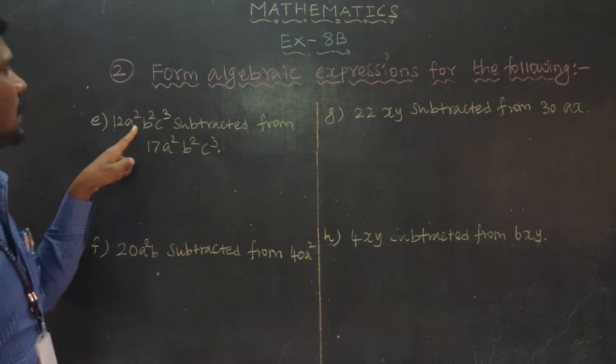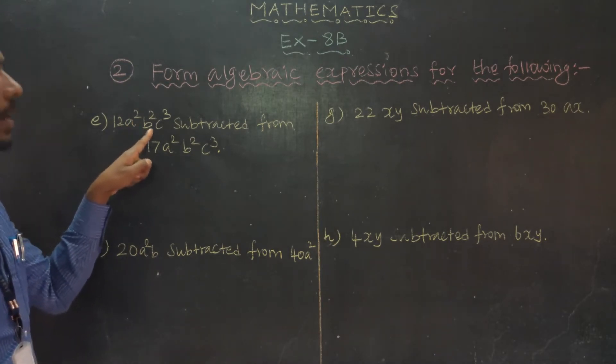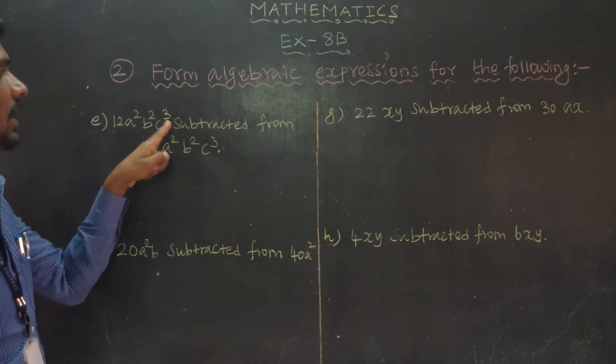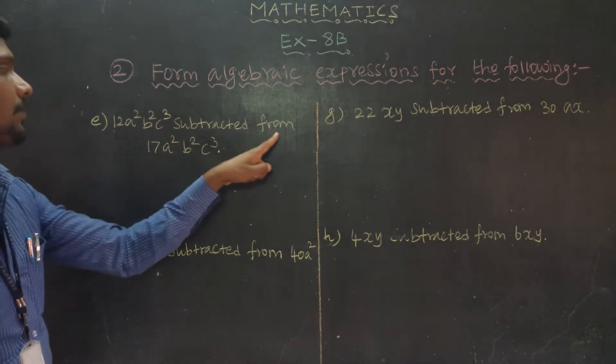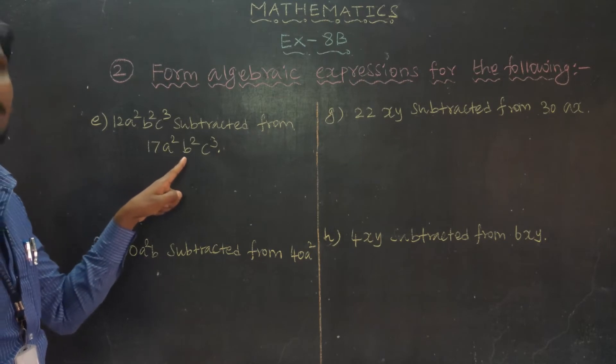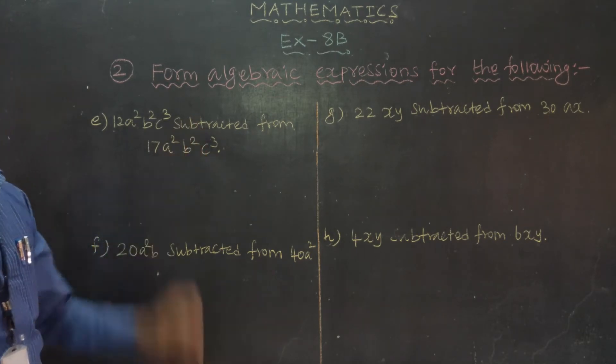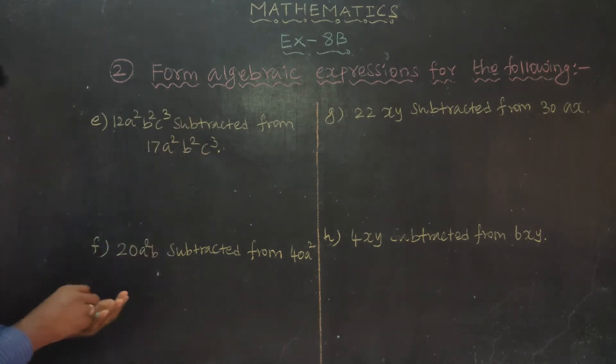12 A squared B squared C power 3, subtracted from 17 A squared B squared C power 3.